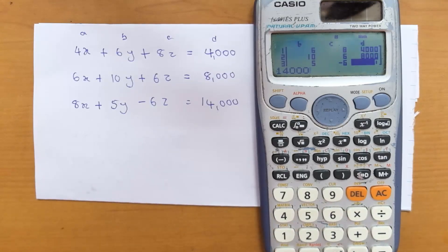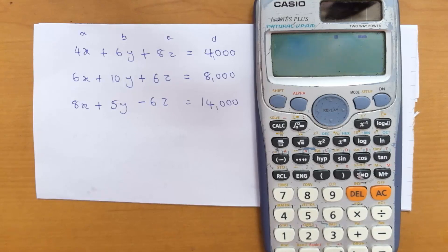Now we have to get the answers, so press equals again. For x you are getting a value of 1437.5. For y you are getting a value of 125.